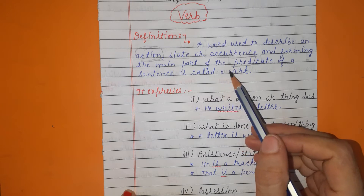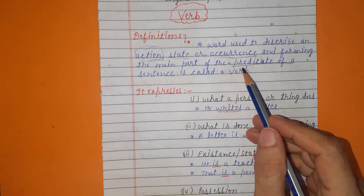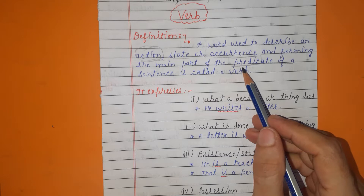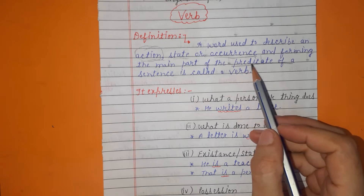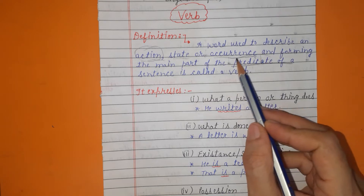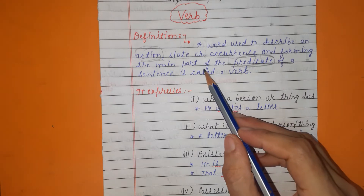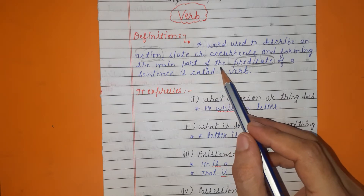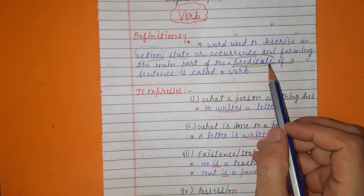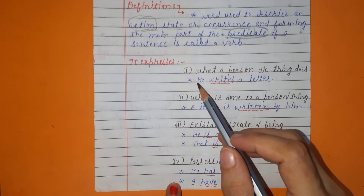Verb is the main part of the predicate. Students, when we have done the topic of sentences, I told you that there are two main parts of a sentence — one is subject and the other one is predicate. So verb forms the main part of the predicate.